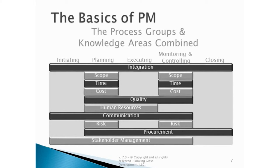Be very careful in reading this diagram — this is not a linear diagram denoting time. It is not arguing that the first thing that happens on every project is initiating, then you plan, execute, monitor and control, and then close out in a nice, neat, linear lockstep. In fact, nothing could be further from the truth. Monitoring and controlling is an ongoing process that happens throughout the entire life of the project. And that means risk is also happening and being managed throughout the entire life of the project — a very important notion.